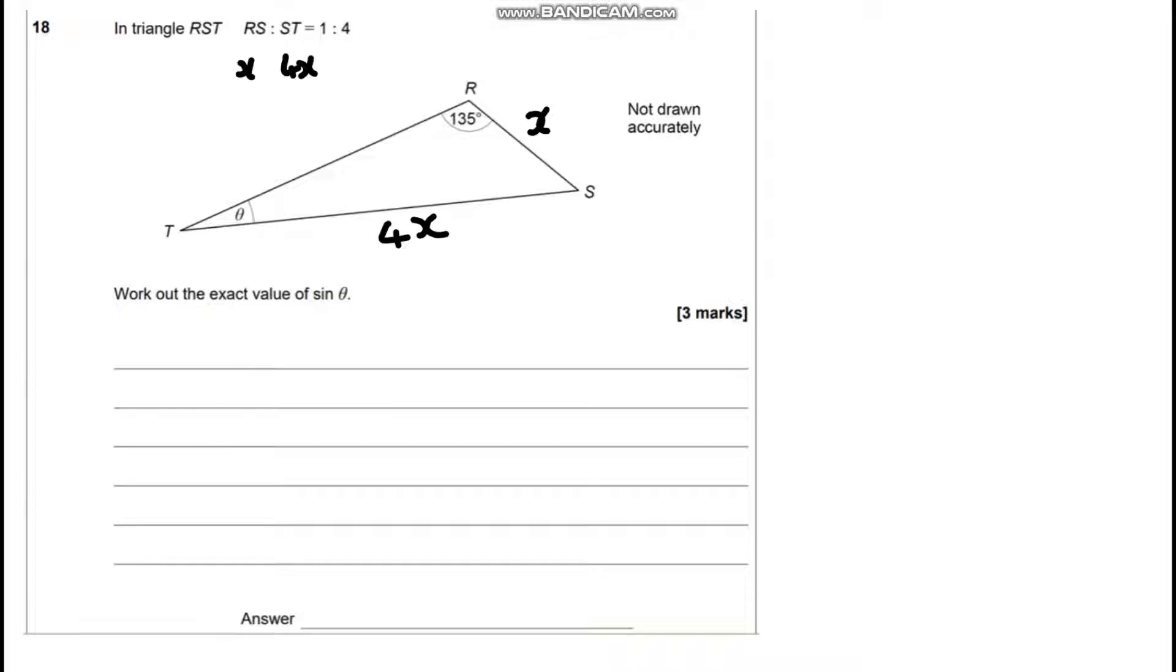Now if you notice, we've got two sides and two angles, with the sides and the angles being opposite each other. So we know we're going to be looking at the sine rule. So we're going to have sine of theta over X is sine of 135 over 4X.